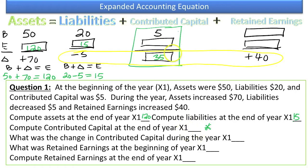But we're still trying to get this answer. We can't solve that yet without knowing the change. Now that we have the change, we can then work our way through. Take our beginning plus our change equals our ending. Beginning is $5, the change is $35 equals $40 ending contributed capital. Now we have the information to fill in. Compute contributed capital at the end of year X1, that is $40. The change was up $35.